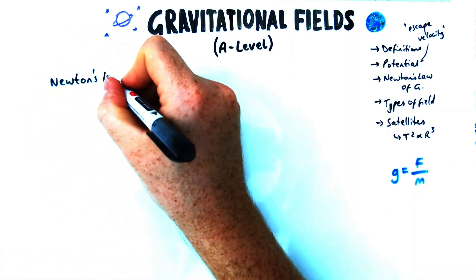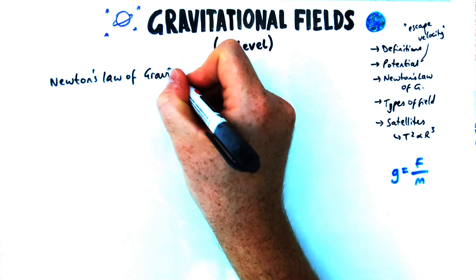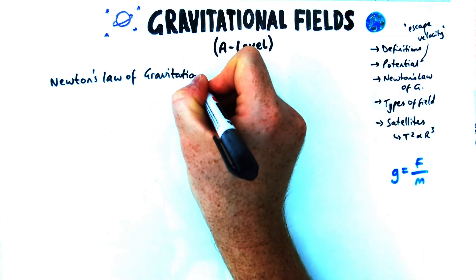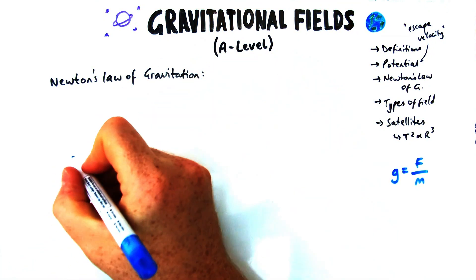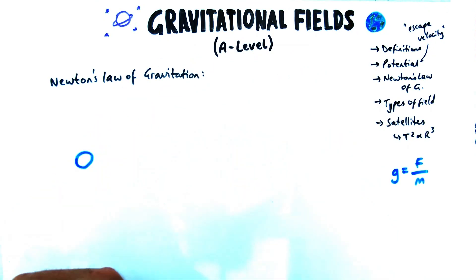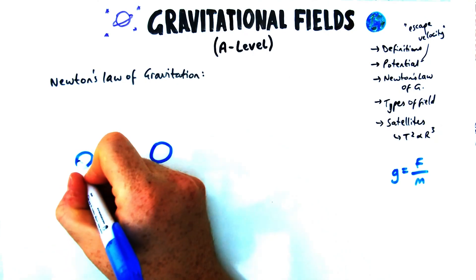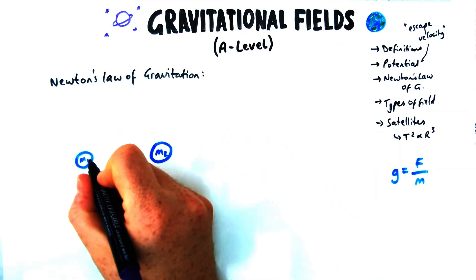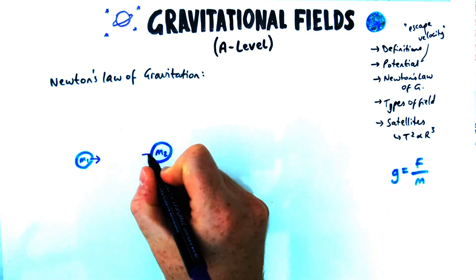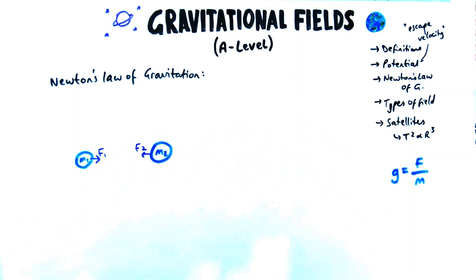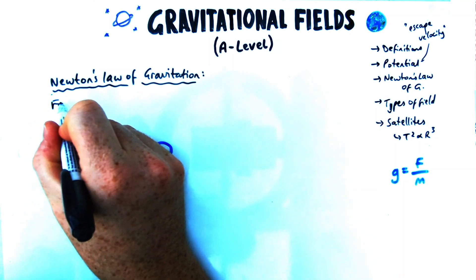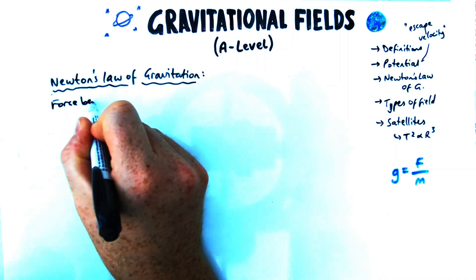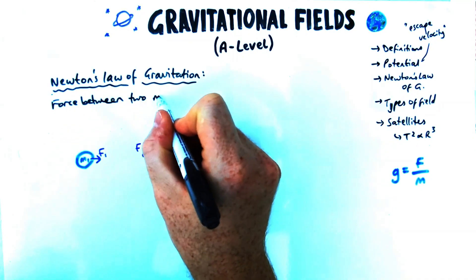Let's move on to Newton's law of gravitation — a really fundamental law developed by Isaac Newton. It was measured first before it was formulated, using measurements of stars and planets in the night sky. It describes how two masses interact, and it says there's a force between these masses that depends on two things.